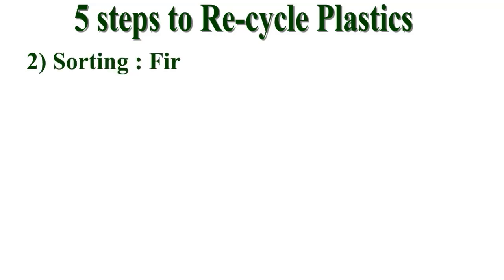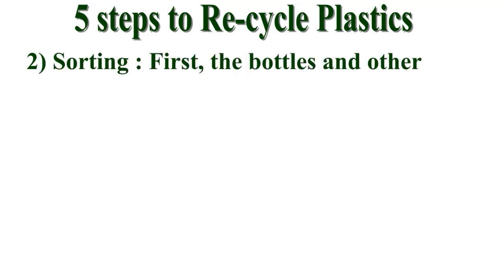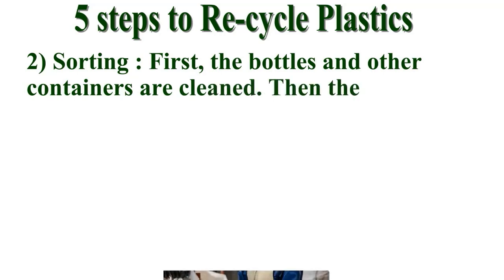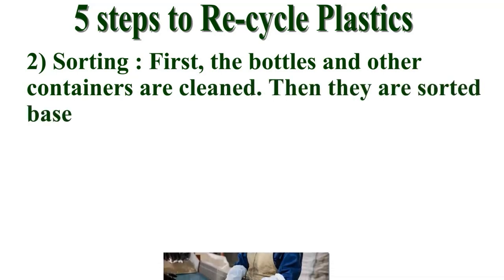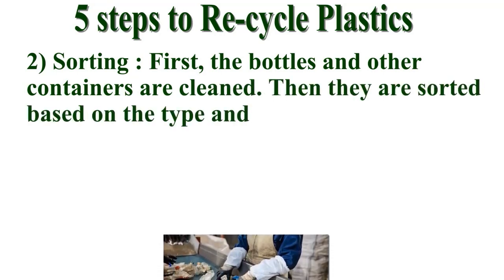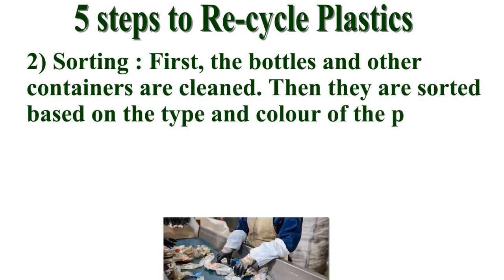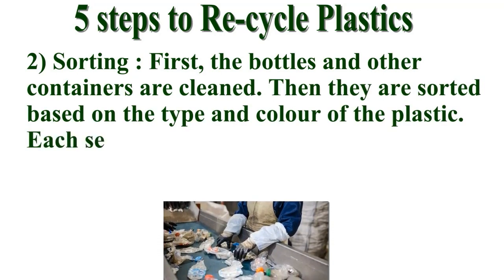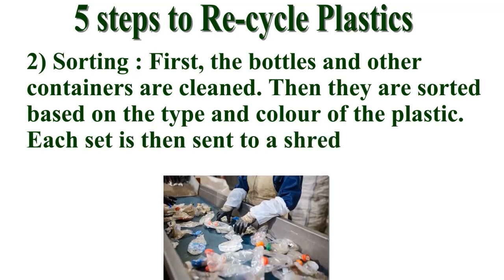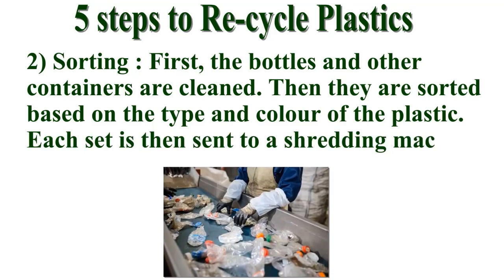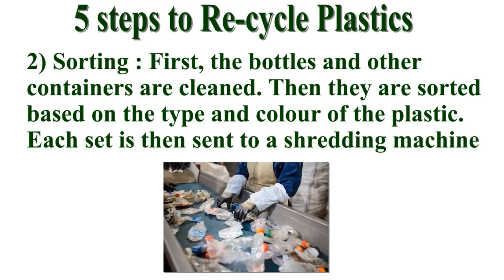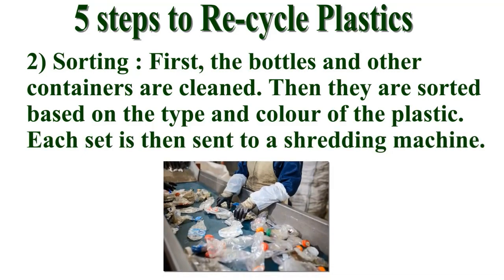Step 2 — Sorting: First, the bottles and other containers are cleaned. Then they are sorted according to their type and color. Each set is then sent to a shredding machine — a machine where the plastics are cut into small pieces.